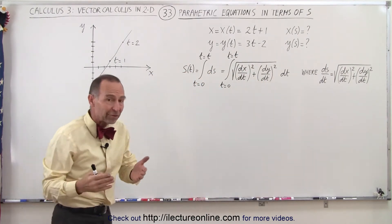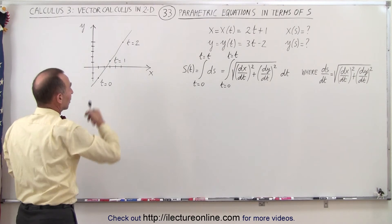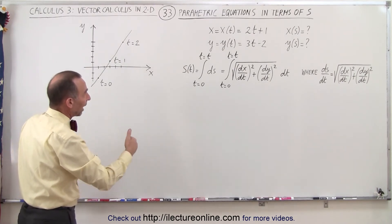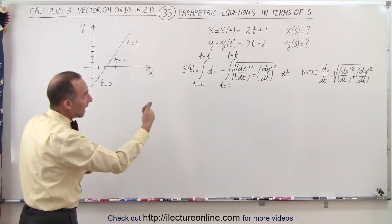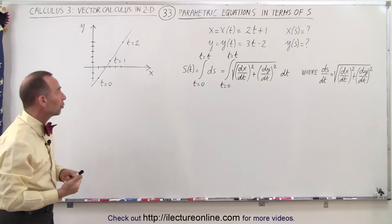If we graph those two functions, then that's exactly what it looks like. It looks like a straight line. Notice as t changes linearly, x and y will change linearly as well.